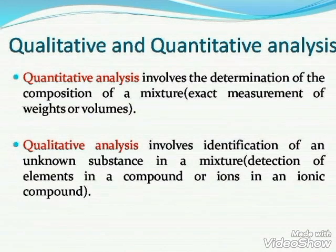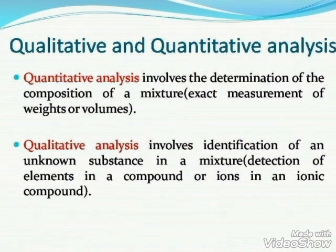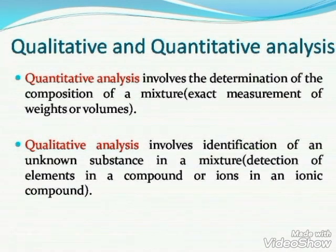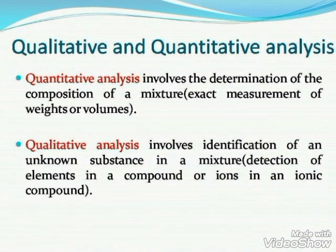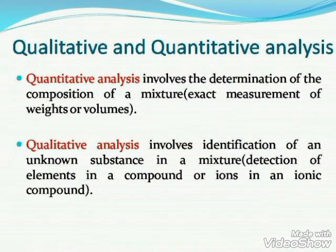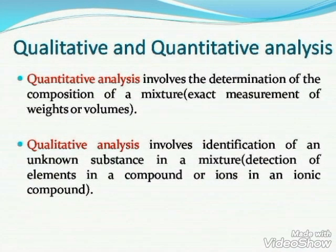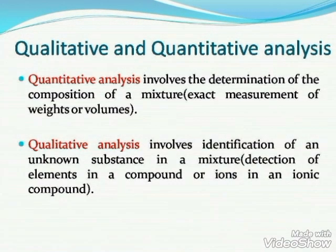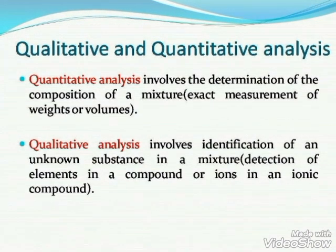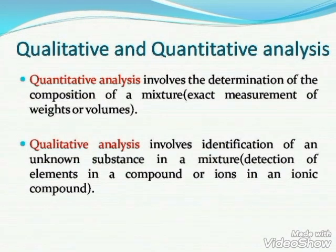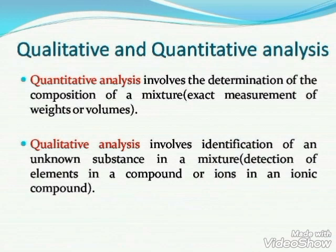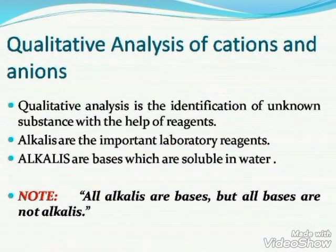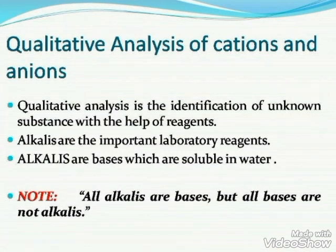Quantitative analysis, as the name suggests, involves the measurement of weights and volumes — we are determining the composition of the various components in a mixture or compound, finding out how much of each element is present. In qualitative analysis, we are identifying the unknown substances present in a mixture — identifying which one is a positive ion and which one is a negative ion. For this we have various different types of chemicals which help us in identifying the positive and negative ions. So qualitative analysis of cations and anions means identification of unknown substances with the help of reagents.